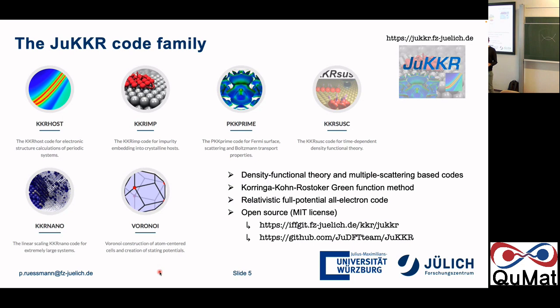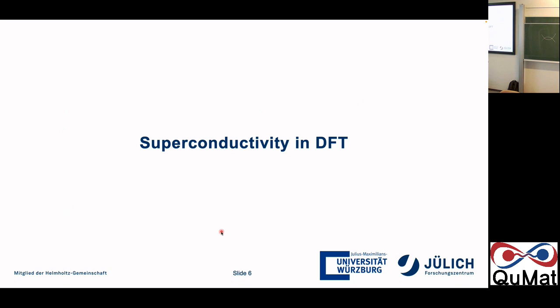The KKR is a special implementation of density functional theory which expresses everything in terms of Green's functions and uses multiple scattering theory. It is a method which can do relativistic full-potential all-electron calculations. For potential users, it is important to know that this is an open source code, so you can just go ahead and download and use it. I want to talk about how we do superconductivity in this density functional theory approach.